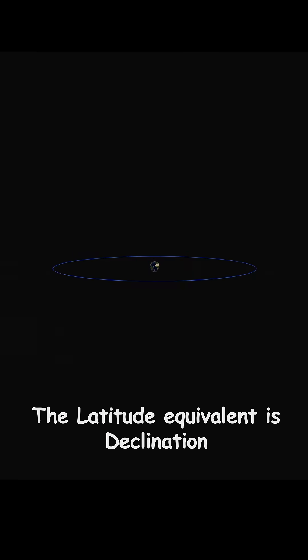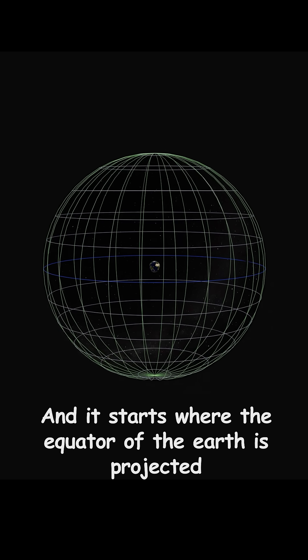In celestial coordinates, the latitude equivalent is declination, and it starts where the equator of the Earth would normally be projected.